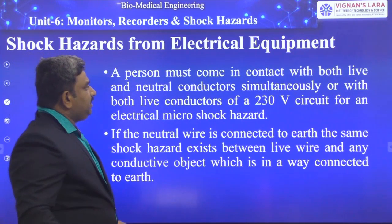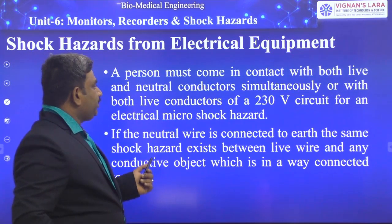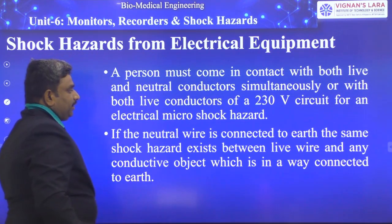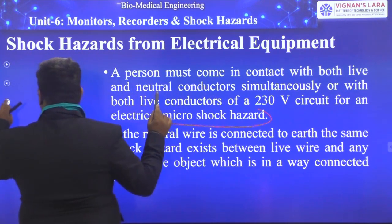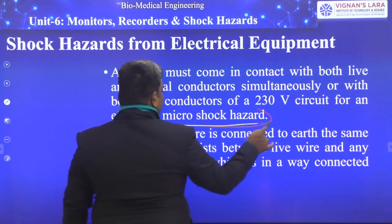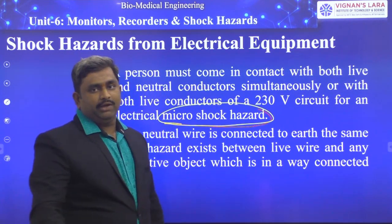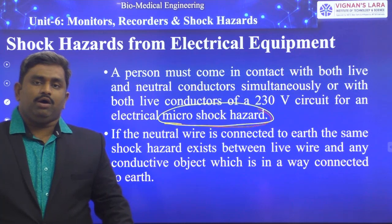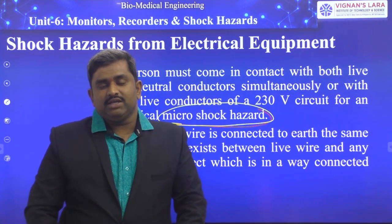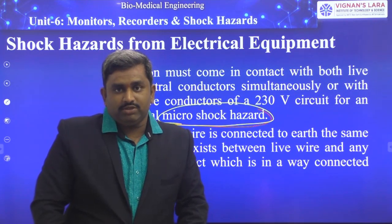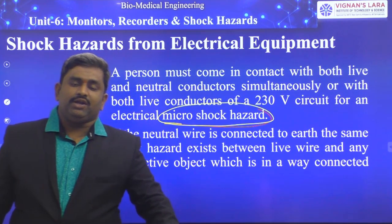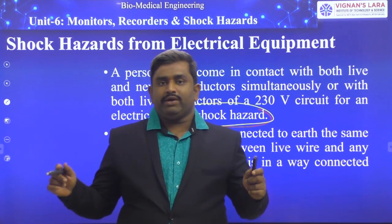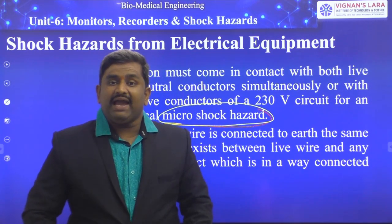A person must come in contact with both live and neutral conductors simultaneously for an electrical microshock hazard. In the previous classes we discussed microshock and macroshock. Microshock causes damage to internal organs when the phase and neutral conductors are connected internally to the body. For macroshock, the electrical conductors are connected to the external body surface. These two contacts coming to the external body surface cause macroshock.